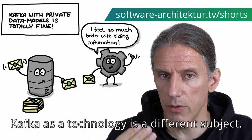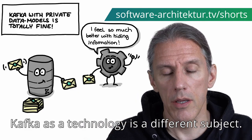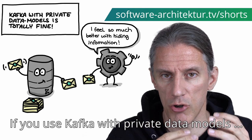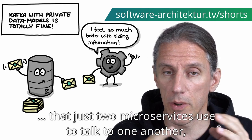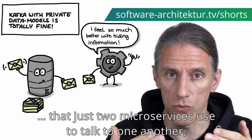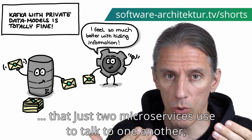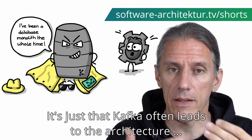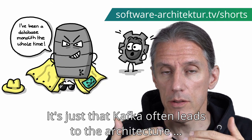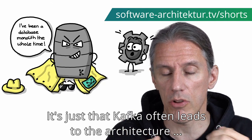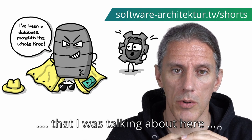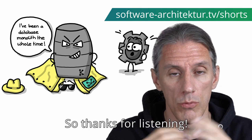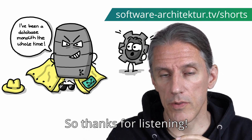Kafka as a technology is a different subject. If you use Kafka with private data models that just two microservices use to talk to one another, that's perfectly fine. It's just that Kafka often leads to the architecture that I was talking about here, and I think that's often a problem. So thanks for listening.